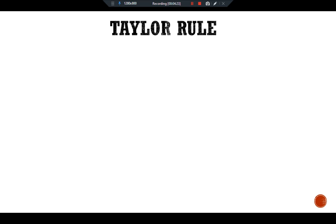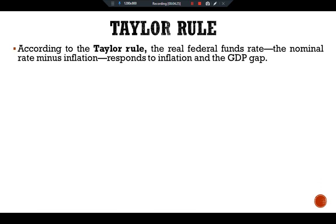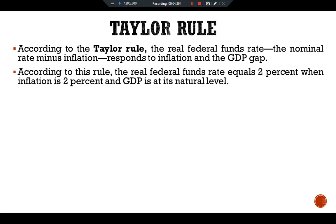According to the Taylor Rule, the real federal funds rate — that is, the nominal rate minus inflation — responds to inflation and the GDP gap. According to this rule, the real federal funds rate equals two percent when inflation is two percent and GDP is at its natural level.